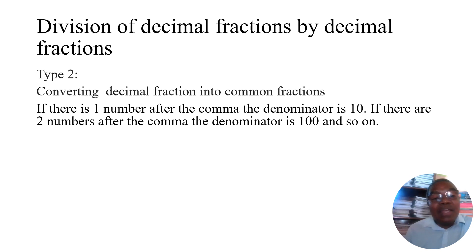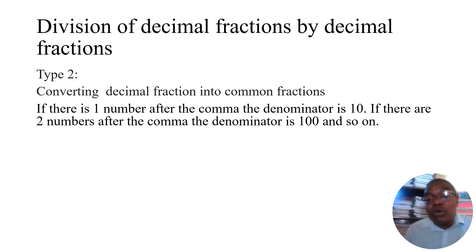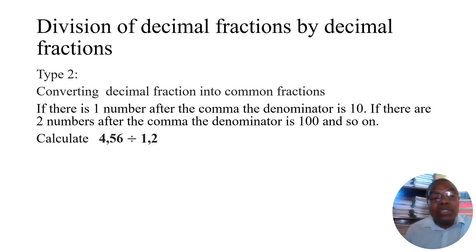In Type 2, convert the decimal fraction into a common fraction. If there is one number after the comma, the denominator is 10. If there are two numbers after the comma, the denominator is 100, and so on.